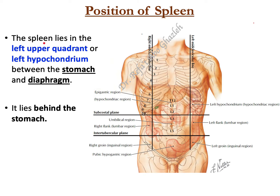Hi and welcome everybody. Today I'm going to talk to you about the position of the spleen and its measurements and surface anatomy. Let us start with the division of the abdomen. There is another video about the divisions or patterns used to divide the abdomen. There are two types of division — in this figure you can see the nine-division pattern.